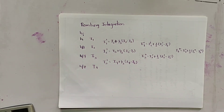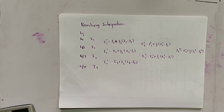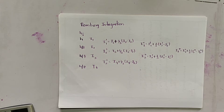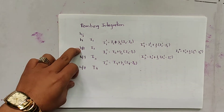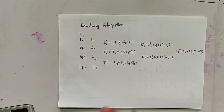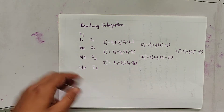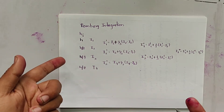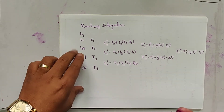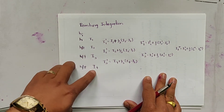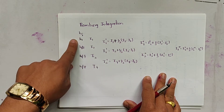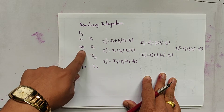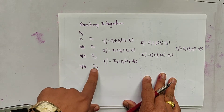In this video we are going to find the integral of a function by using the Romberg integration method. In Romberg integration, h is divided into four sections: h, h/2, h/4, and h/8. This can be used with Simpson's 1/3 rule, Simpson's 3/8 rule, or the Trapezoidal rule. We calculate I1, I2, I3, and I4, where in I1 h is used, in I2 h/2 is used, in I3 h/4 is used, and in I4 h/8 is used.